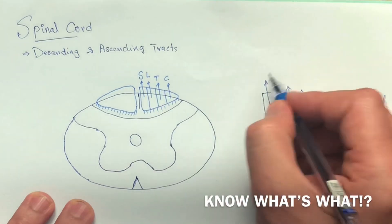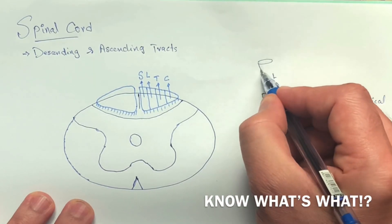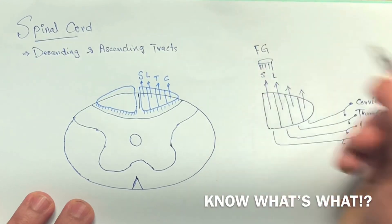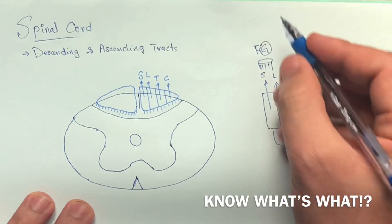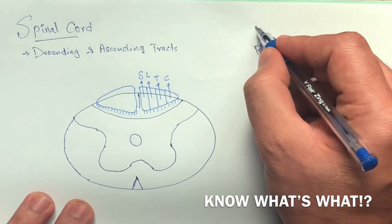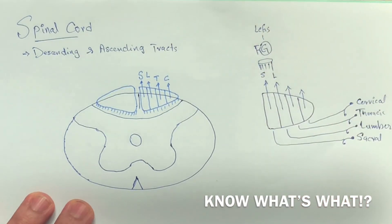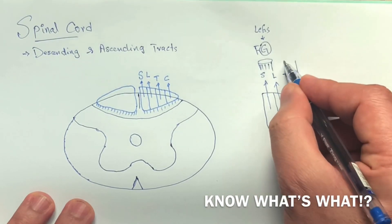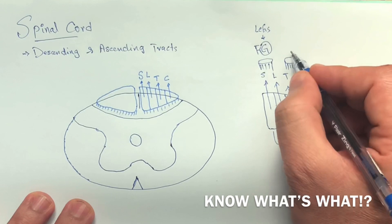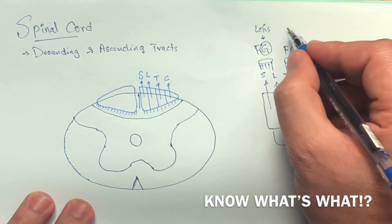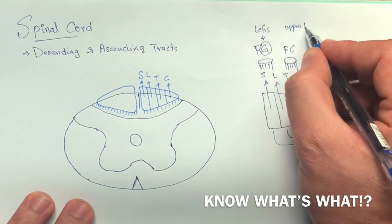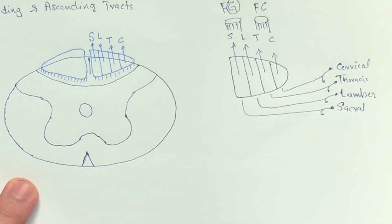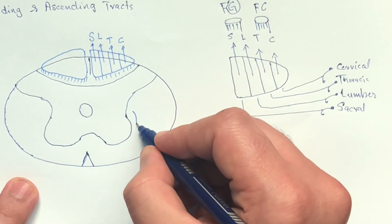The sacral and the lumbar together make a fasciculus which is called the fasciculus gracilis. Since there is a G in the spelling of legs, remember from G — and the legs are great, so gracilis. Then we have the fasciculus cuneatus that receives information from the upper body, upper limb, and the trunk.